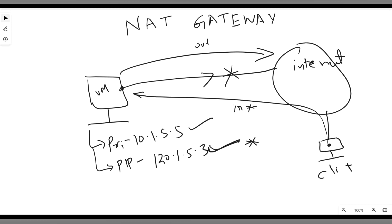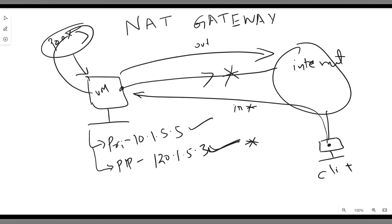Private IP address is used to communicate within your network privately or internally. In a corporate environment, you may have something called a proxy server. All your outbound internet connections go through the proxy. The proxy will have a public IP address and will use it to communicate to the internet. In this case, you don't need any public IP address on the VM, because the proxy takes care of the public IP address and outbound internet connections.